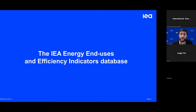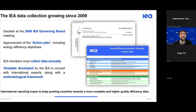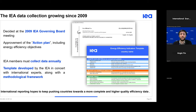The IEA decided at the 2009 governing board meeting at ministerial level to collect detailed end-use consumption data annually, with the objective to promote energy efficiency. End-use data and statistics need to be collected annually to develop and track consumption patterns and efficiency indicators. The IEA, in concert with international experts, developed a questionnaire template based on a robust and harmonized methodology, including internal consistency and comparison checks performed with counterpart institutions to ensure data quality and assist when issues arise.